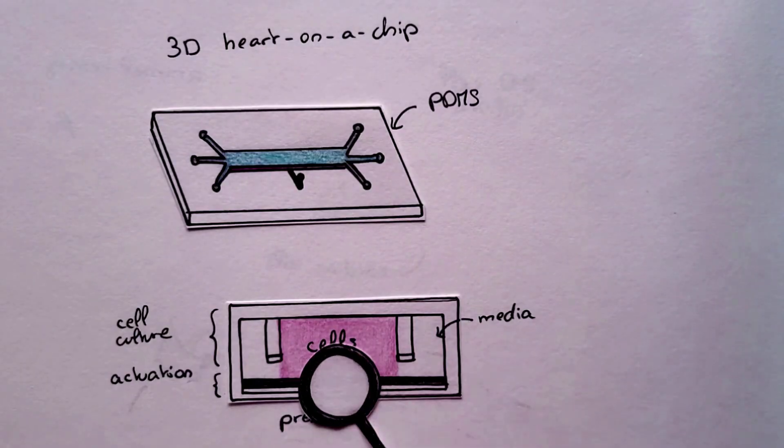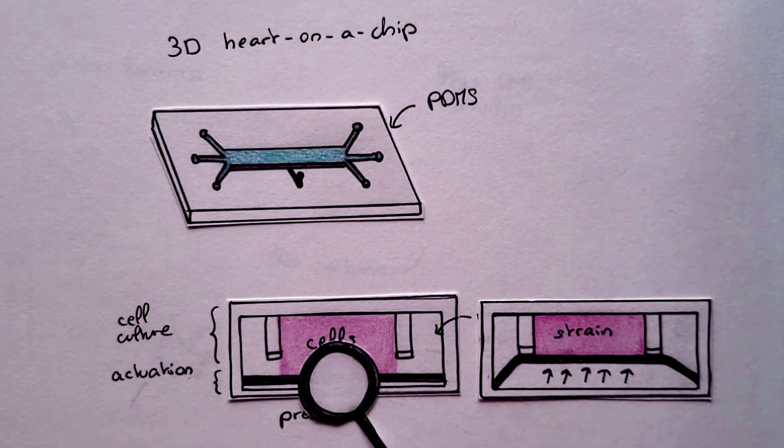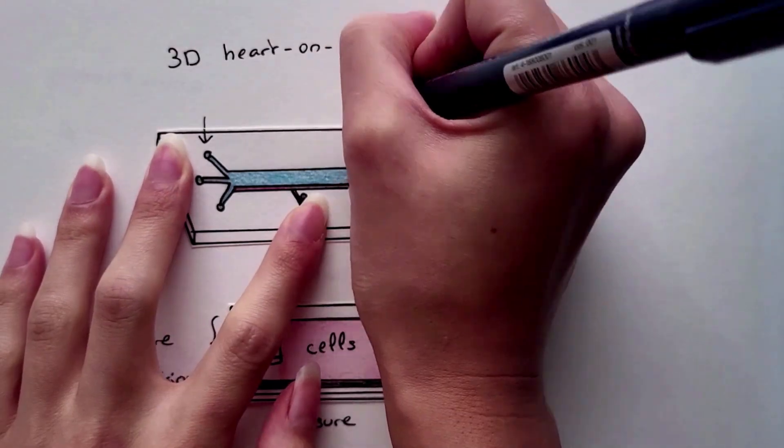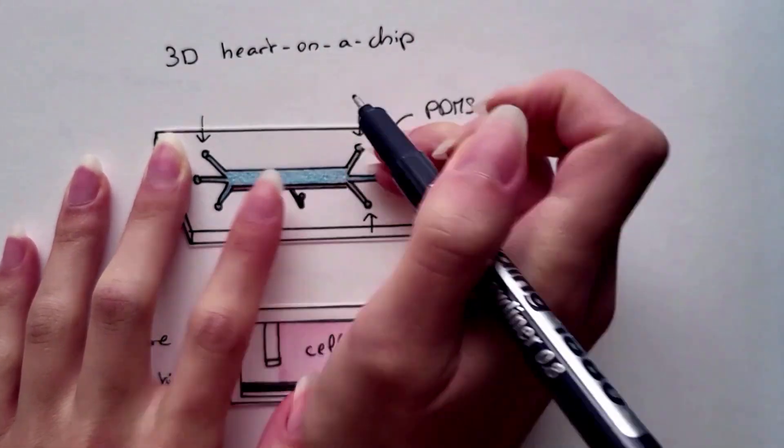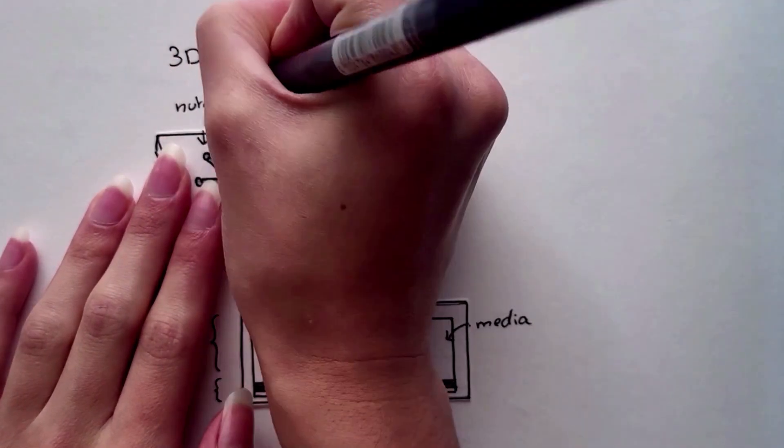We also need to add microactuators. For example, to send electrical signals or to implement mechanical stimulation to provoke beating and pumping. And finally, we also have microchannels going in and out of the chip to provide the cells with nutrients and oxygen.